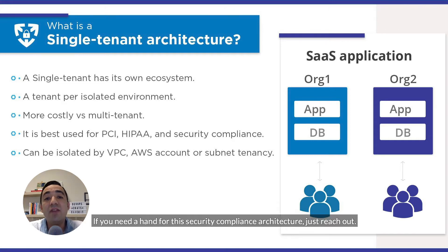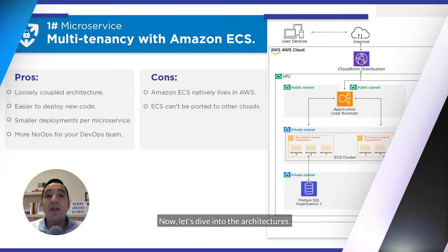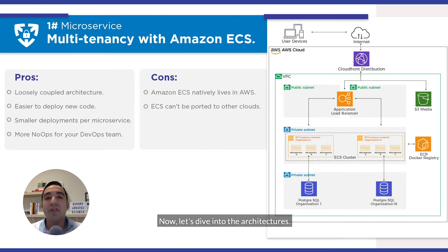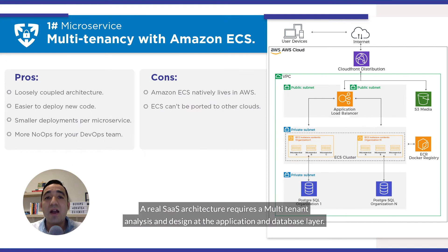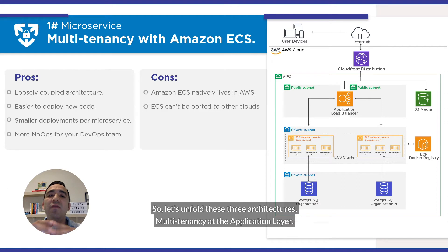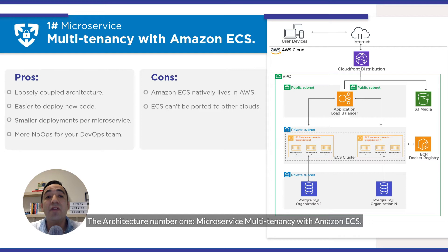Now, if you need a hand for this security compliance architecture, just reach out. A real SaaS architecture requires a multi-tenant analysis and design at the application and database level. So let's unfold these three architectures. Multi-tenancy at the application layer. Architecture number one is microservice multi-tenancy with Amazon ECS.